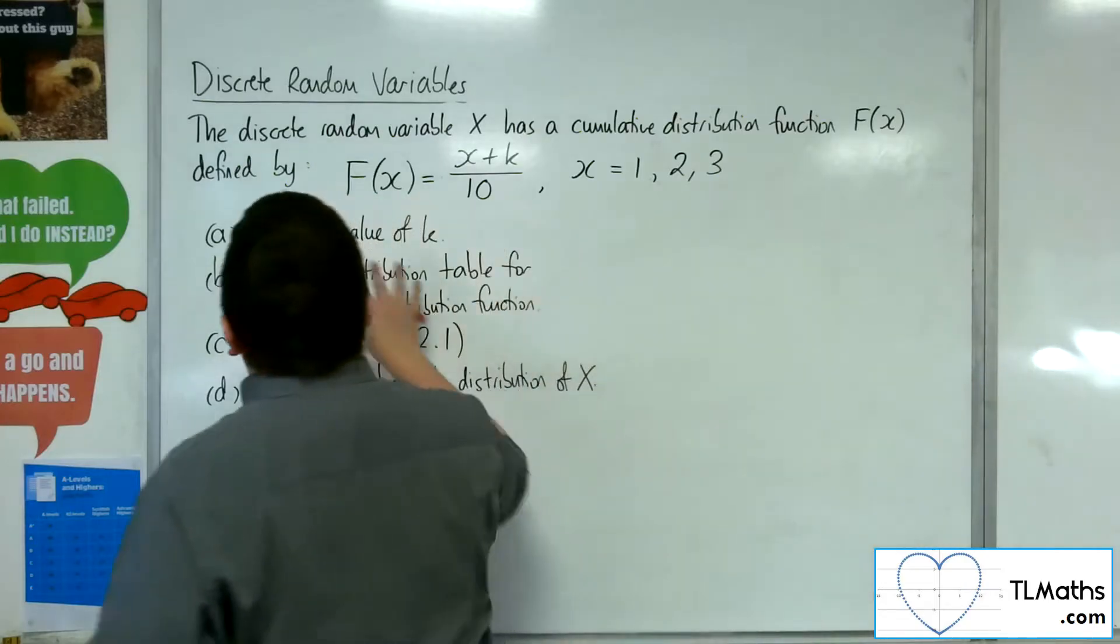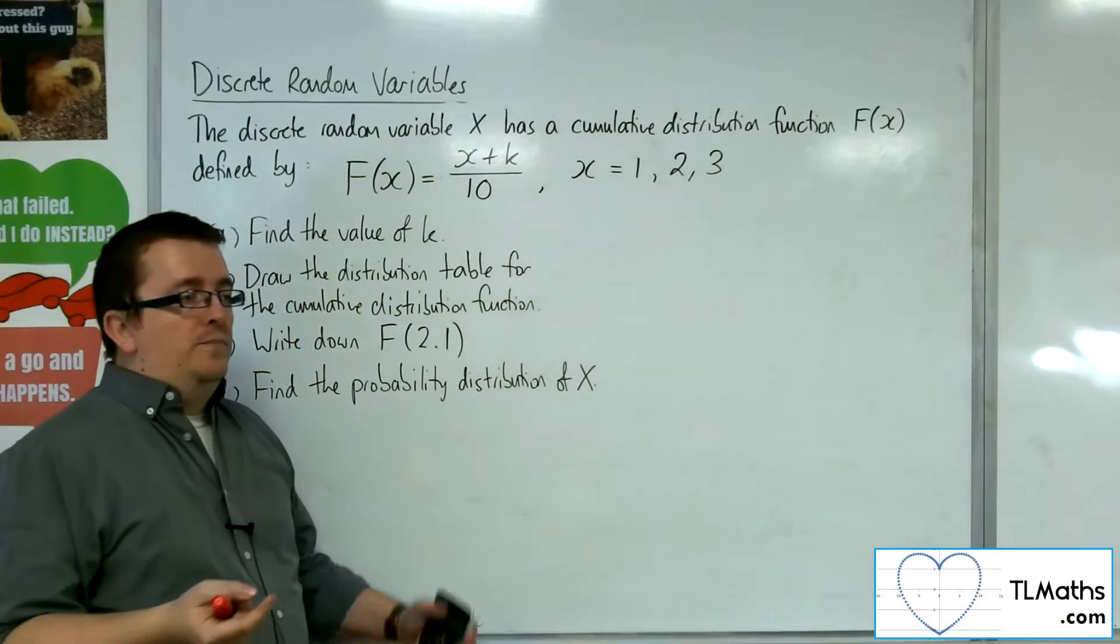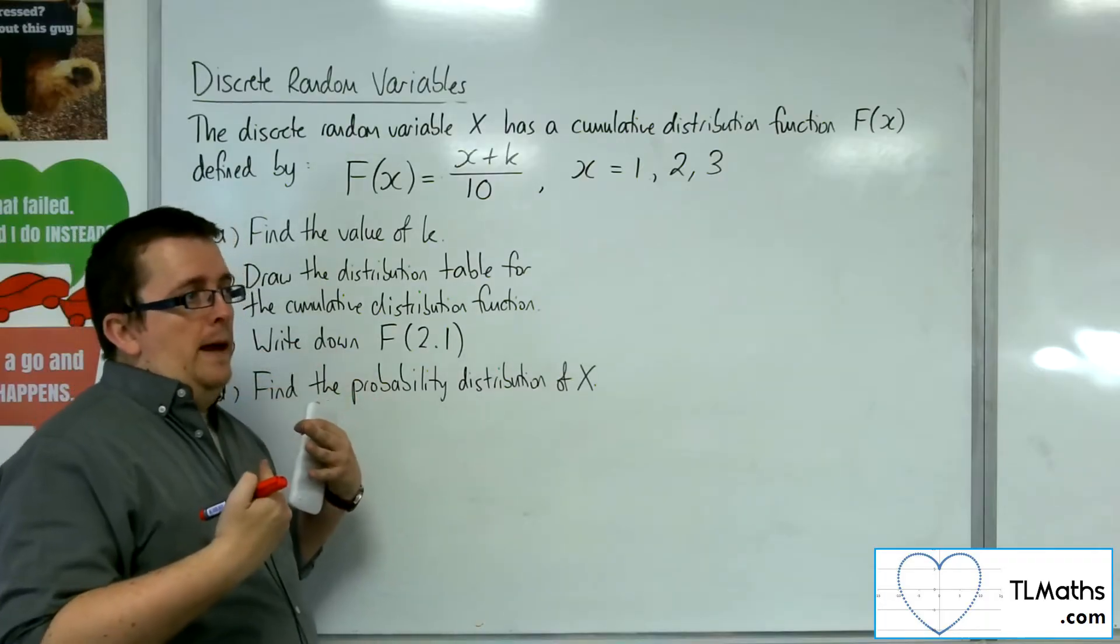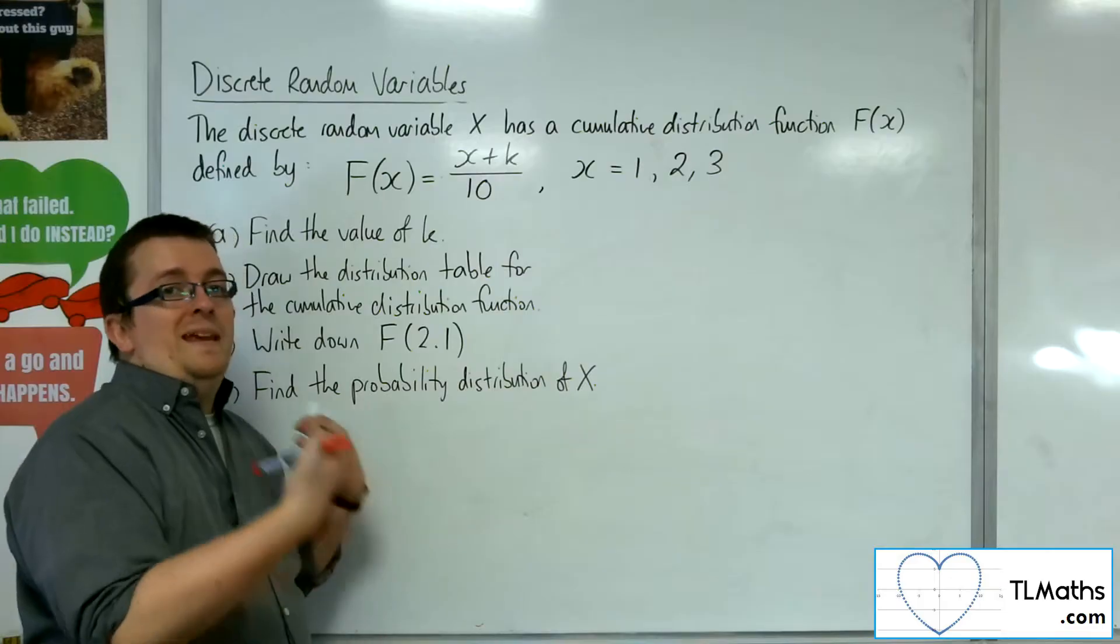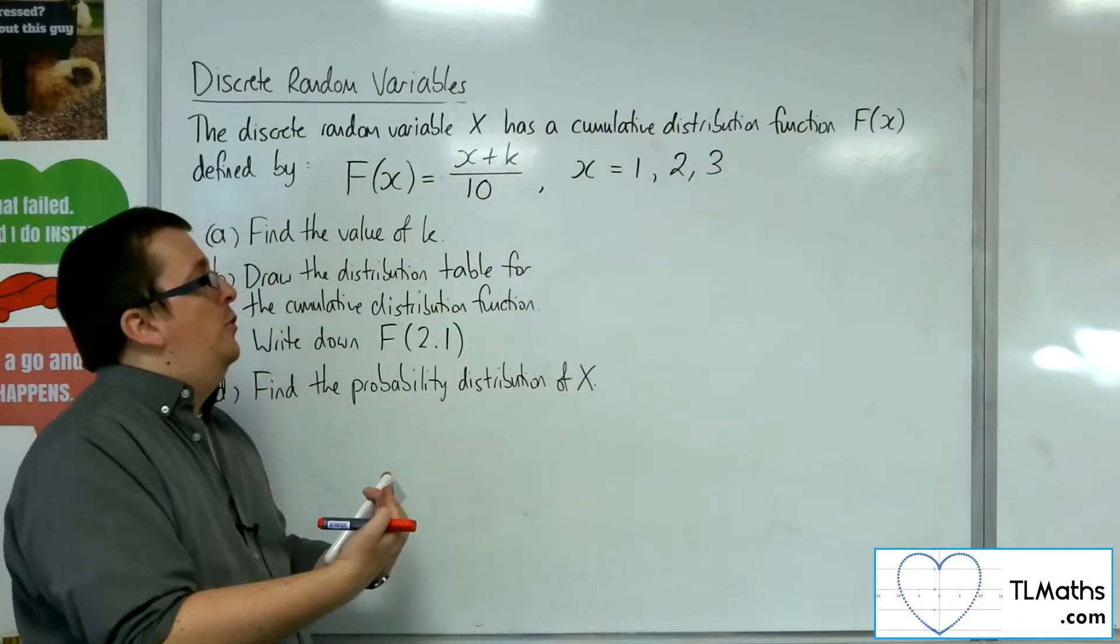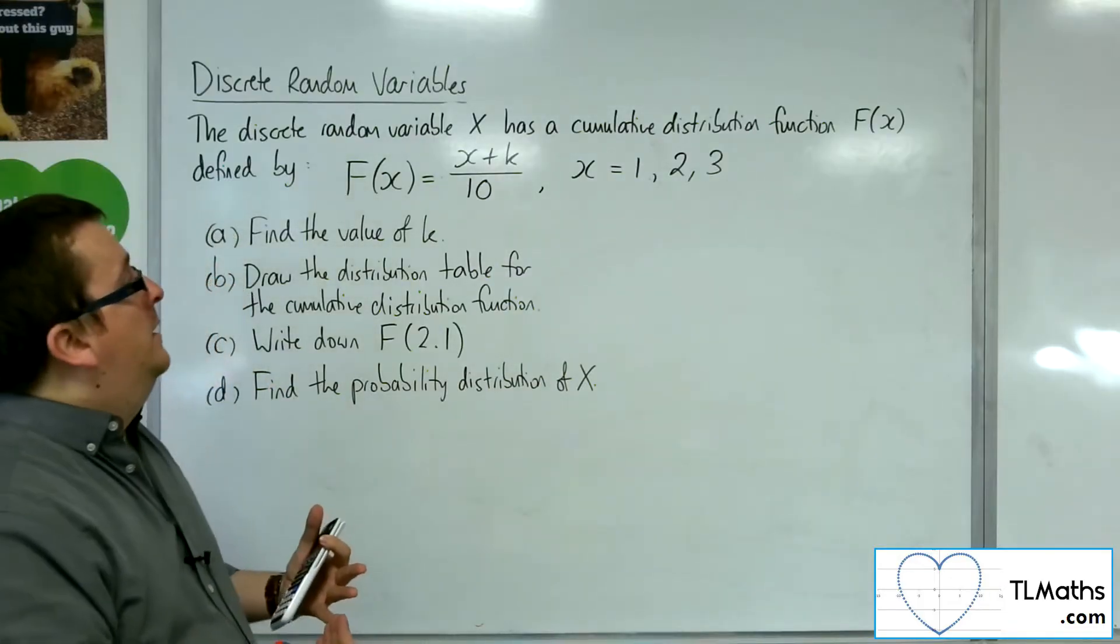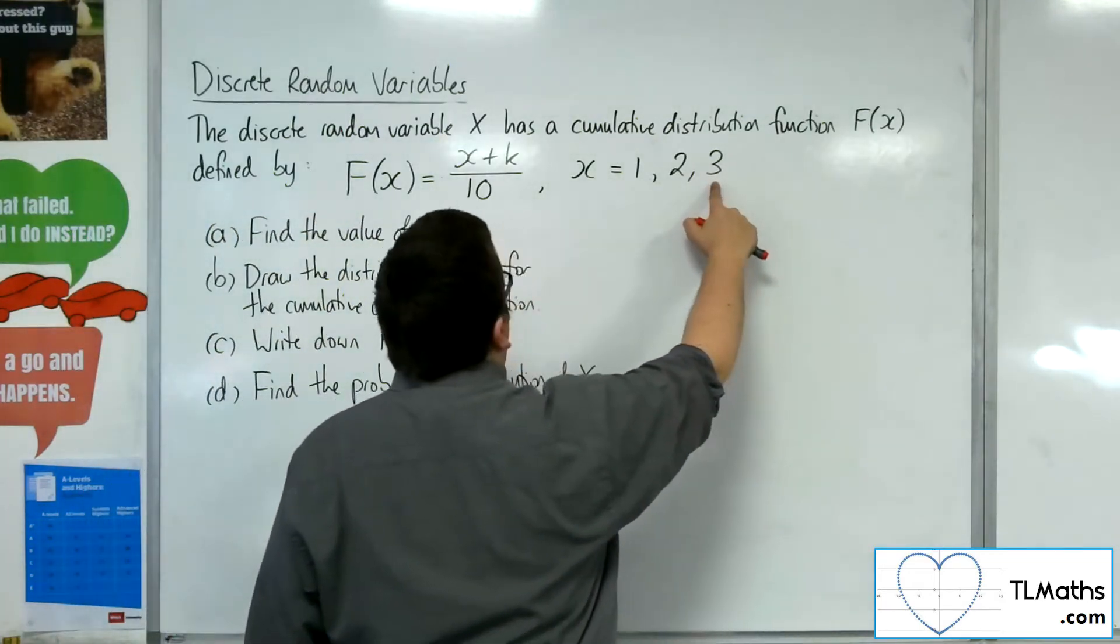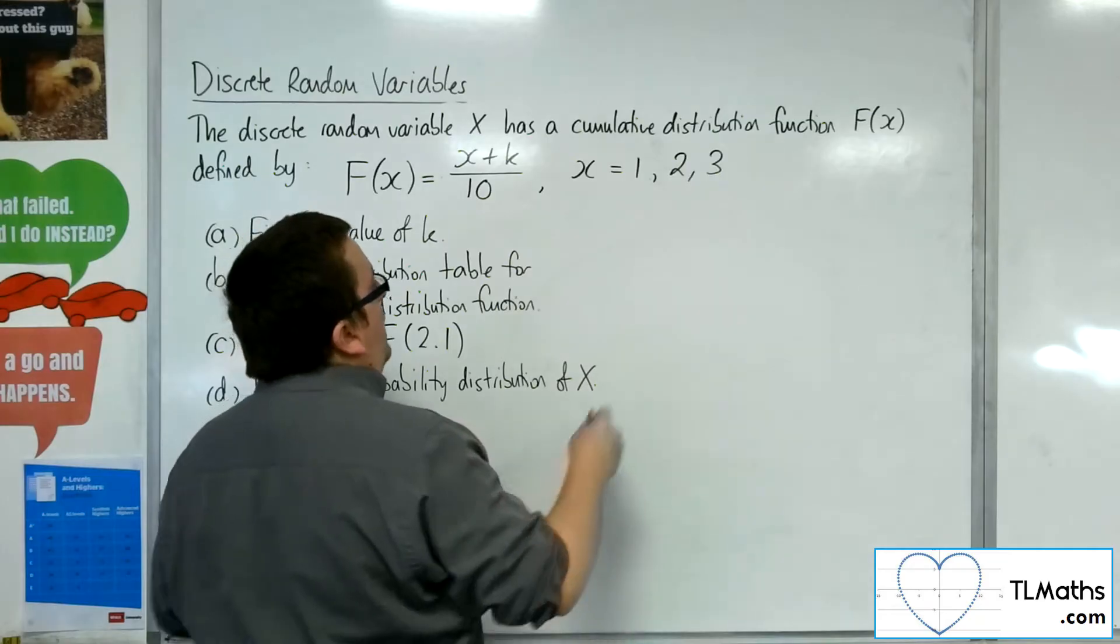The first thing we need to do is find the value of k. Because the cumulative distribution, the last value that would be in its table, in its tabular form, has to be 1. That means that this final value when x is 3, f of 3 must be 1.